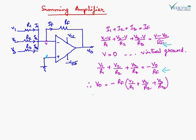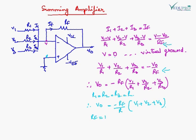Now if we consider R1 equal to R2 equal to R3, all equal to R, then V_out will be minus RF upon R, multiplied by (V1 plus V2 plus V3). Now suppose RF is also equal to R; therefore V_out will be minus of (V1 plus V2 plus V3). This is how we get the output as the sum of all the inputs.